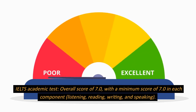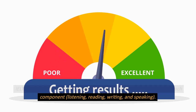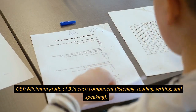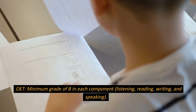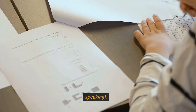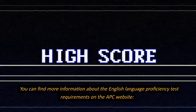The minimum scores required for these tests are: IELTS Academic Test — an overall score of 7.0, with a minimum score of 7.0 in each component: listening, reading, writing, and speaking. OET — a minimum grade of B in each component: listening, reading, writing, and speaking. You can find more information about the English Language Proficiency Test requirements on the APC website.